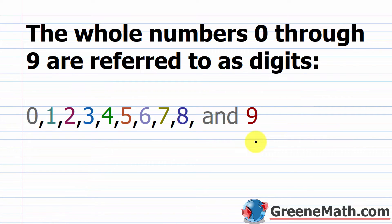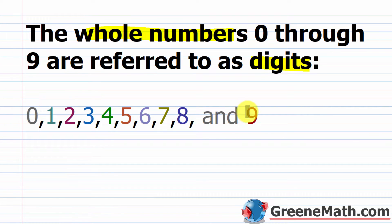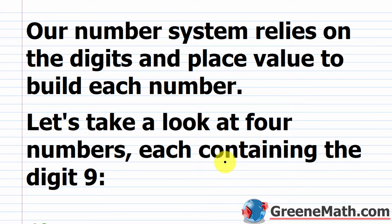Now let's talk about what we call the digits. These are the first 10 whole numbers, and they are used to build numbers. So the first 10 whole numbers — zero through nine — are referred to as digits. Our number system relies on the digits, that's the first 10 whole numbers, and a place value to build each number.